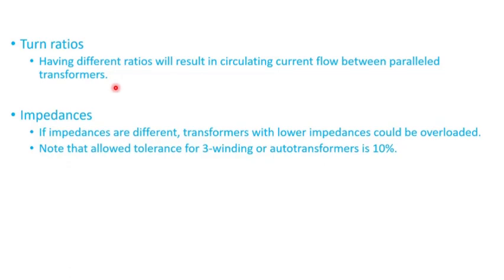Then if the transformers have different impedances, the transformers with lower impedances would have most of the loading, and in some cases they could be overloaded. As we will see in some examples, it just depends on the load they're serving. Just keep in mind when we say the transformer has seven percent impedance...